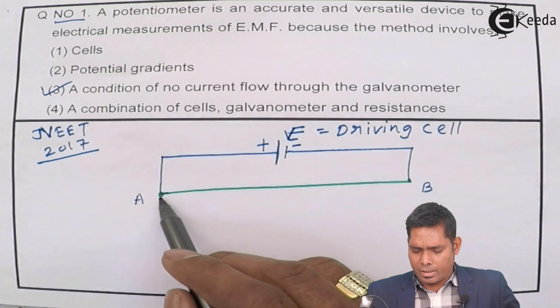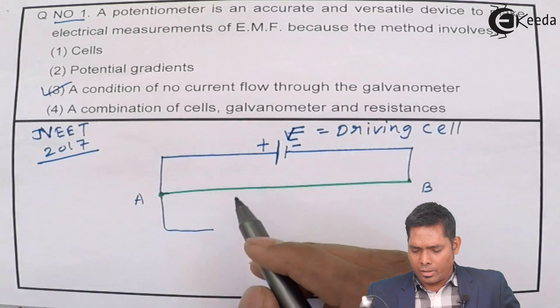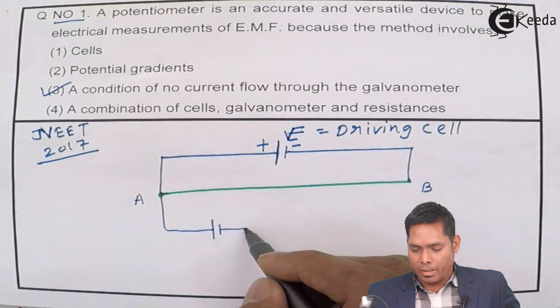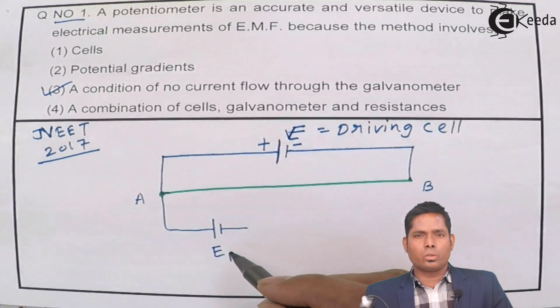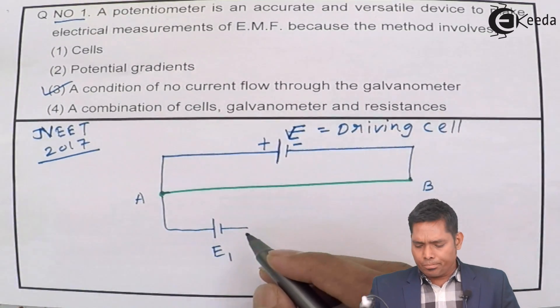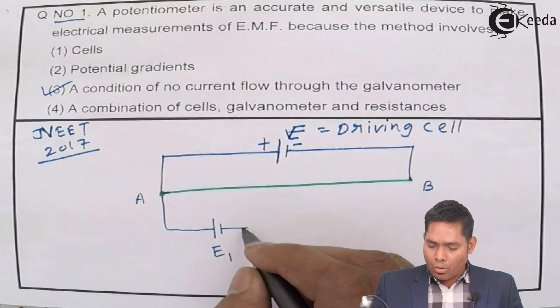To the high we connect the EMF which is to be balanced. The battery of EMF suppose E1. I don't know the value of this E1, suppose unknown EMF. That I want to find out.